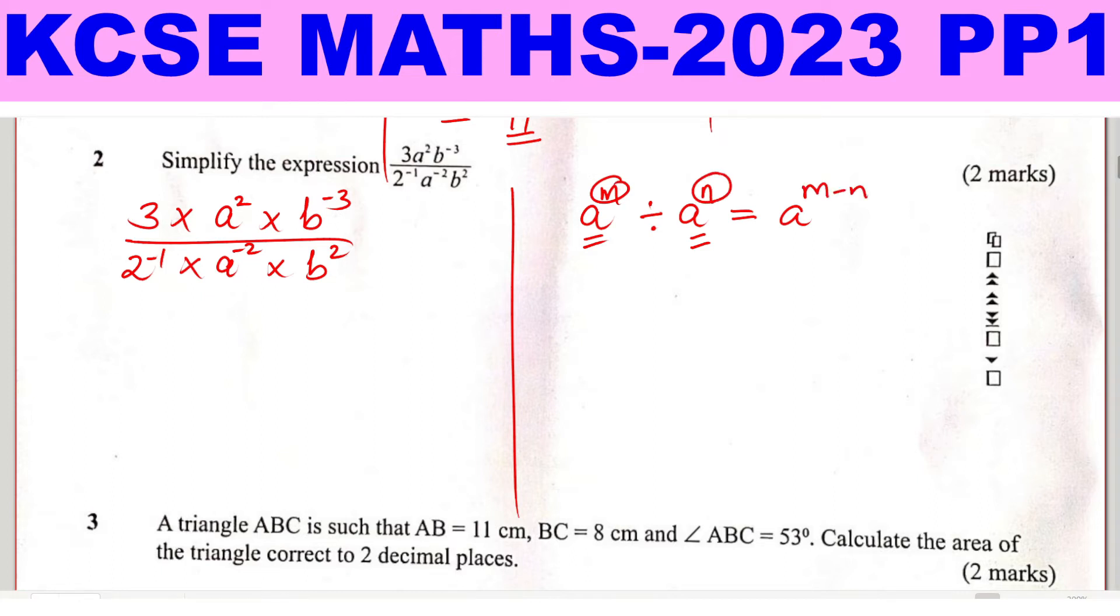So in this particular question, let me deal first with a and b. So look at a, a squared divided by a raised for negative 2. The base is the same. So subtract the powers. So 2 subtract negative 2. And this one will give a raised for 4.